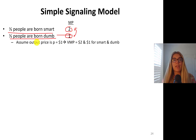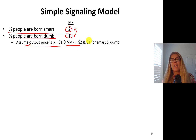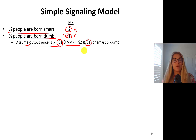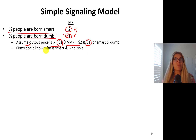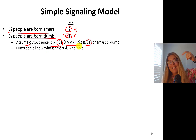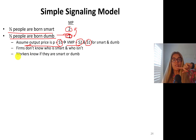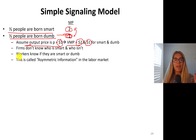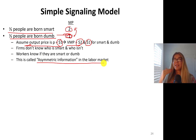Assume that the price of output is $1. The value marginal product of a smart person is two times $1, which is $2. And the value marginal product of a not-so-smart person is only $1 because they produce one unit of output sold for $1. Firms don't know who is smart and who is not. Workers do know if they're smart or not — this is called asymmetric information. Workers know, but employers do not.